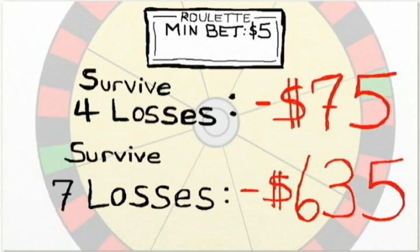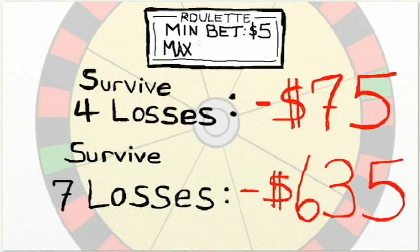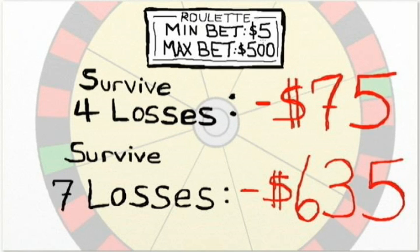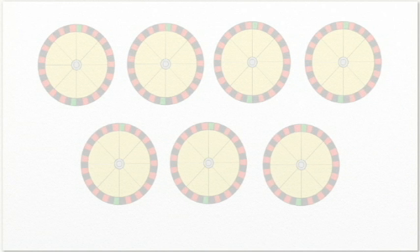Yes, technically if you were able to bet an infinite amount of money, you could actually profit from this system. The problem is that tables have minimum and maximum bet limits. Most $5 minimum tables have a maximum bet of $500. So if you lost 7 in a row, you wouldn't even be able to make the 8th bet of $640 to win back your $5. So this could get pretty expensive pretty fast, if you lose too many times in a row. But they have to happen in a row. How likely is that?